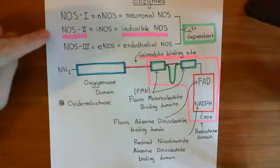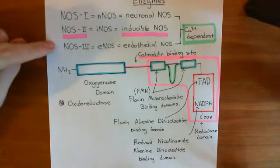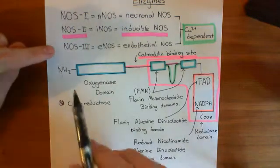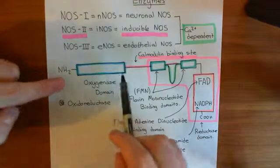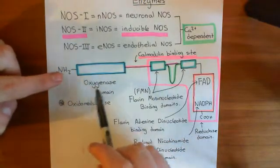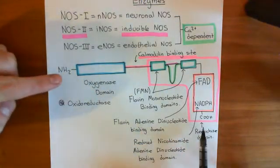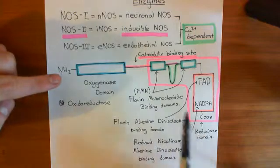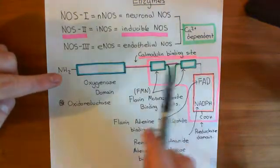There are three different types of nitric oxide synthase protein, and they all have this general structure where at the amino terminus you have an oxygenase domain, and at the carboxyl terminus you then have the reductase domain.